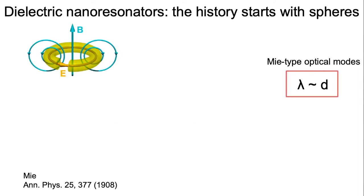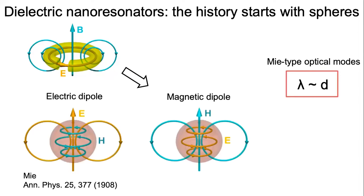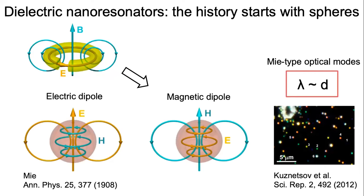Later it was found that if the material of the particle is a high-index one, and if the particle size is comparable to the wavelength of interest, such particles could also support multipolar modes. These can be divided into two groups: electric and magnetic modes.